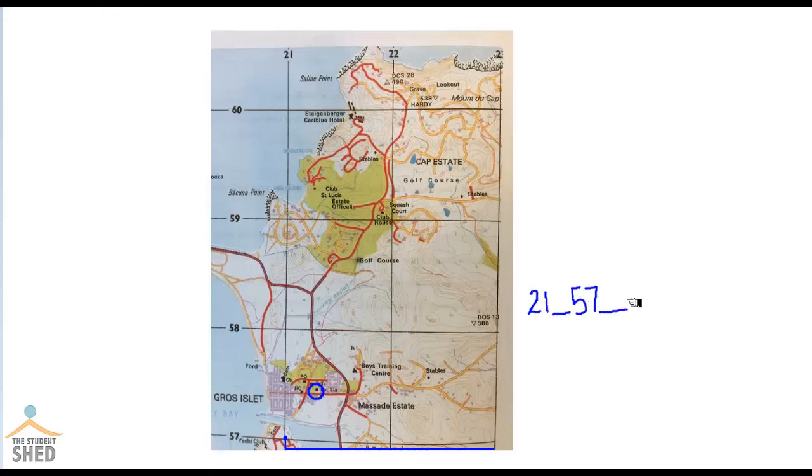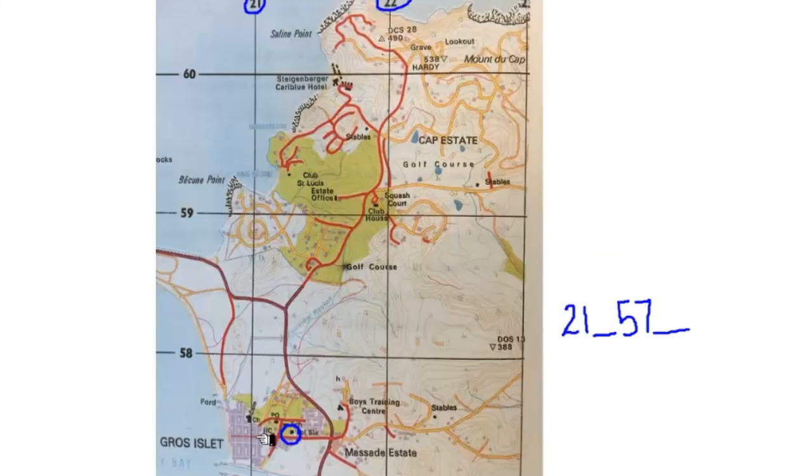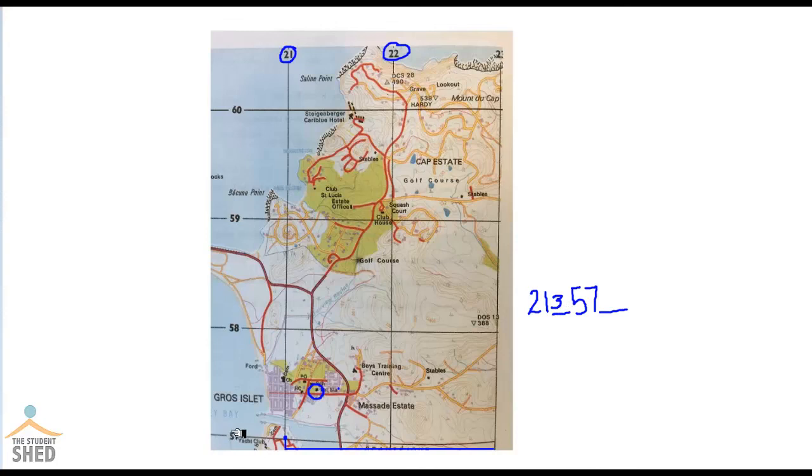And we still have to figure out the third and the sixth digit. So the police station between numbers 21 and 22, I would say the police station is not quite halfway. Halfway would be about here. So I would guess that it's probably 213. And between 57 and 58, the midpoint would be right about where it is. So I would say it is 575. And that's how we determine the six-figure grid reference.